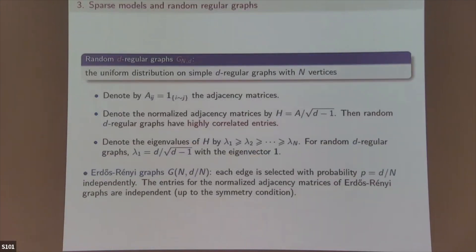The random regular graph: take a simple d-regular graph — d-regular means each vertex has d edges — G(n,d) is n vertices with a uniform probability distribution over d-regular graphs. Look at the adjacency matrix normalized by √(d−1). This normalization is convenient for comparing with standard GOE. The random d-regular graph is very different from Wigner matrices because each row has only d non-zero entries — they are highly correlated.